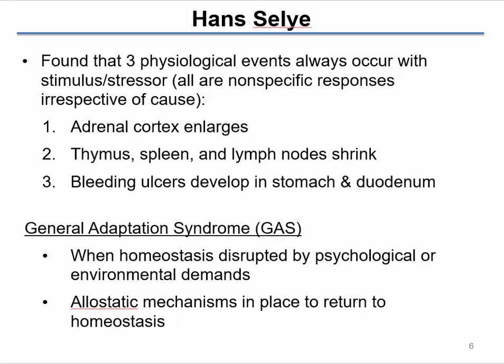He did experiments with animals, stressing them physiologically with electric shock, noxious drugs, and all kinds of things. The responses all came down to the same three findings: the adrenal cortex enlarges; the thymus, spleen, and lymph nodes — immune system organs — shrink; and there become problems with the digestive system, specifically bleeding ulcers in the stomach and duodenum.